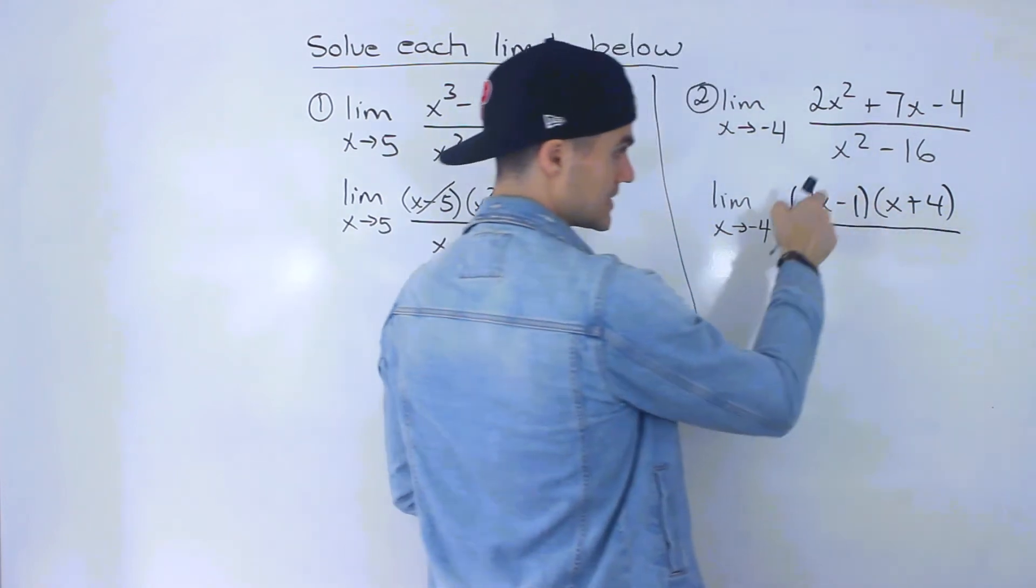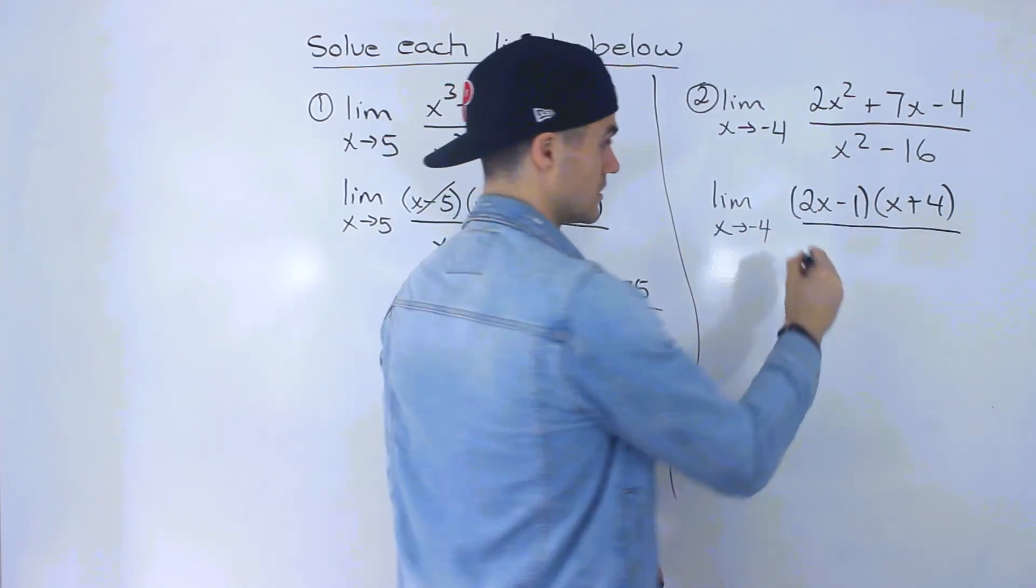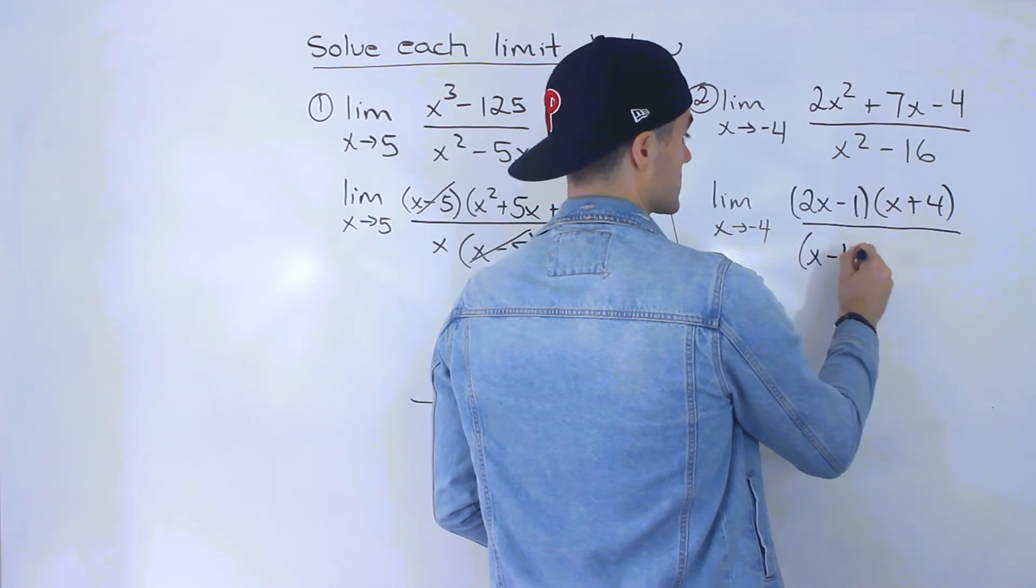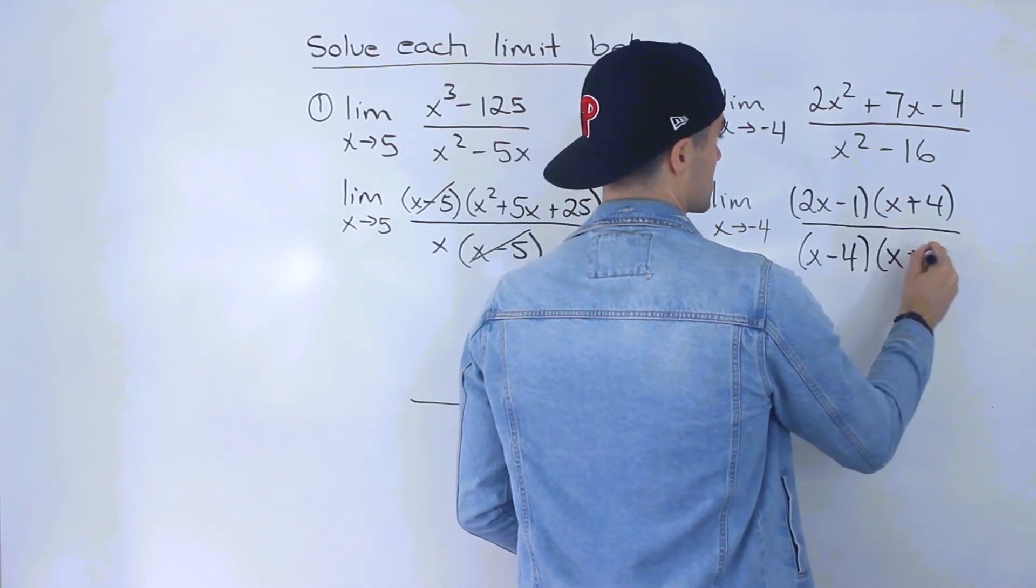And then x squared minus 16, notice that's a difference of squares, which would be x minus 4 times x plus 4.